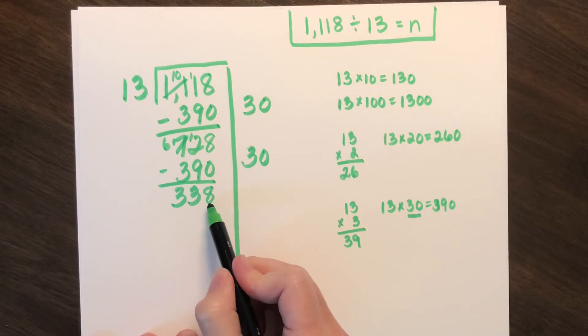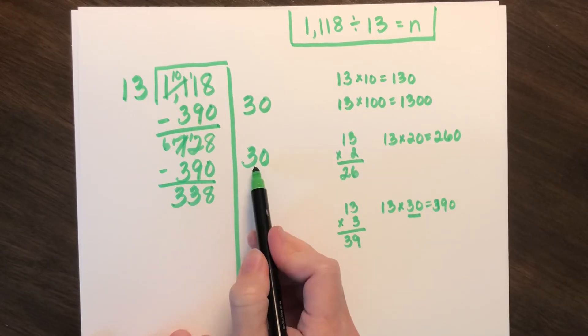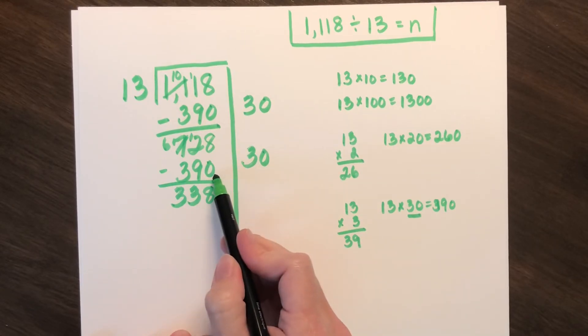I have 338. Can I do another group of 30? No, that would be too high.